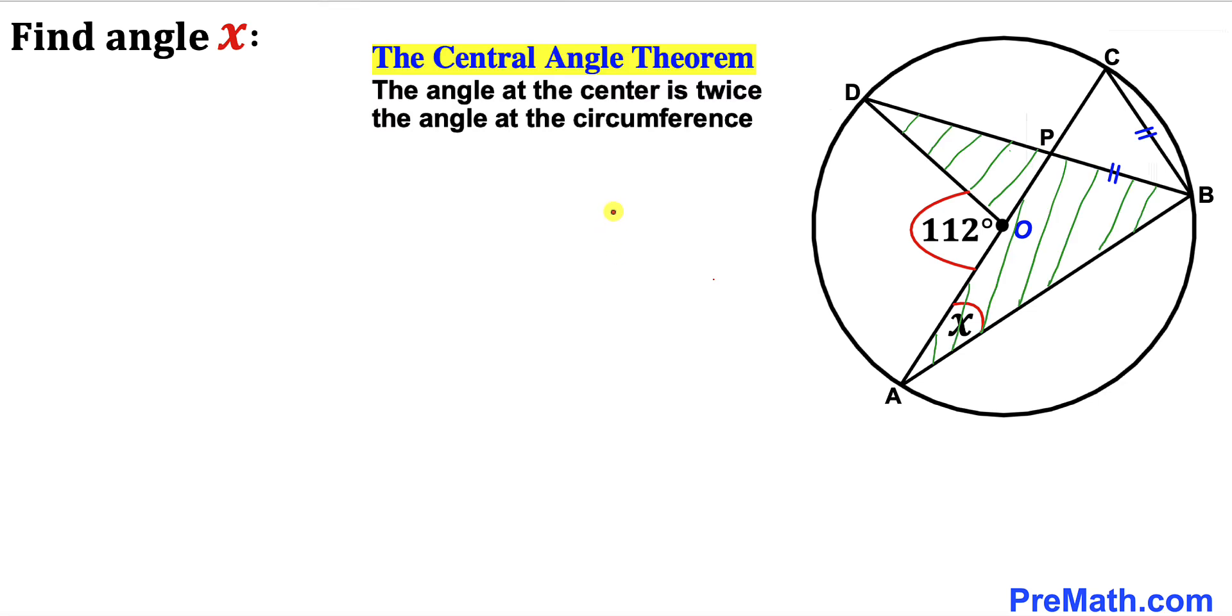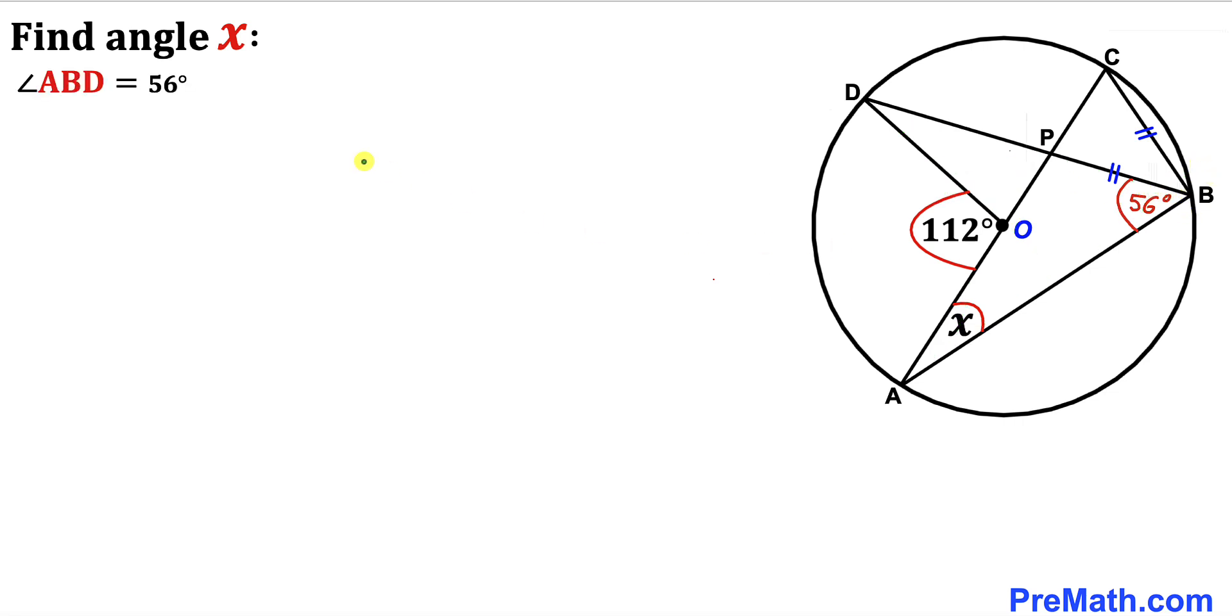Let's recall the central angle theorem. According to this theorem, the angle at the center is twice the angle at the circumference. If this angle is 112 degrees, then this angle is going to be half of that, which is 56 degrees. Therefore, angle ABD turns out to be 56 degrees.